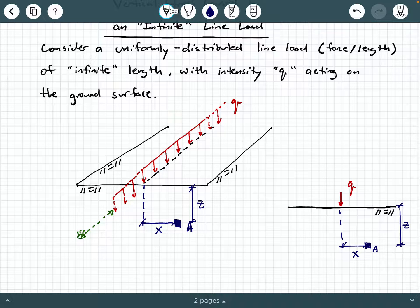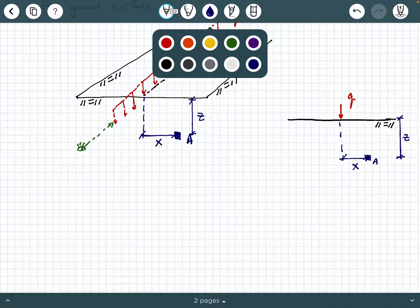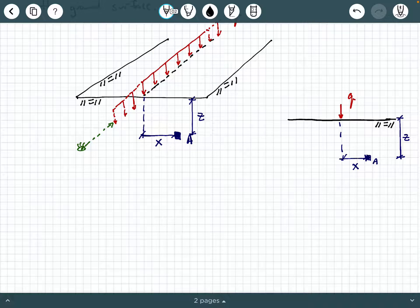So how do we calculate the stress at that point A of interest? So we're going to say that the stress at some depth Z is going to be equal to two times Q times Z cubed, all divided by pi times the quantity X squared plus Z squared, and then we're going to square that quantity.